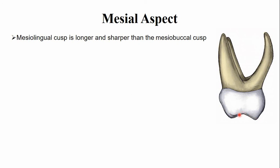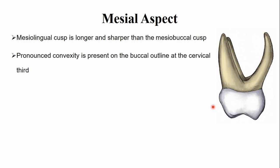This is the mesial marginal ridge. Looking at the buccal surface of the crown, there is a pronounced convexity at the cervical third of the crown. This is a marked convexity. The cervical line at the cementoenamel junction shows curvature towards the occlusal surface.